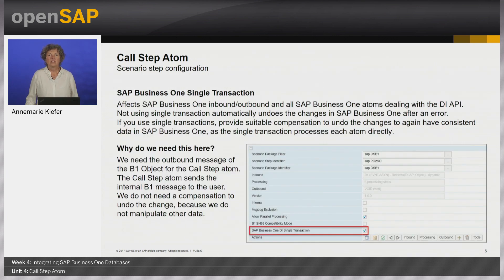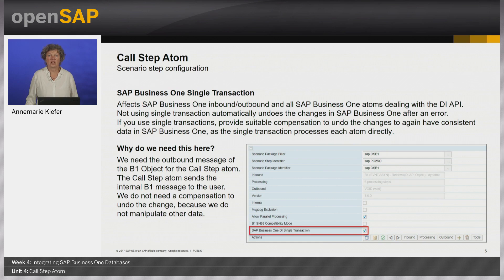We are using the single transaction option. SAP Business One single transaction affects SAP Business One inbound, outbound, and all SAP Business One atoms dealing with the DI API. Usually the integration framework's step processing is one transaction. Changes in SAP Business One are rolled back after an error to keep a consistent state. When using single transactions, provide suitable compensation to undo the changes to again have consistent data in SAP Business One, as the single transaction processes each atom directly.